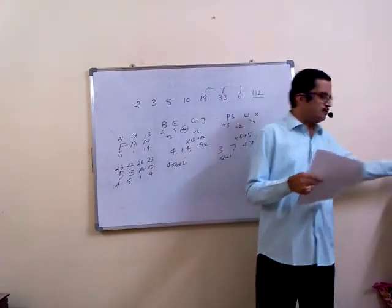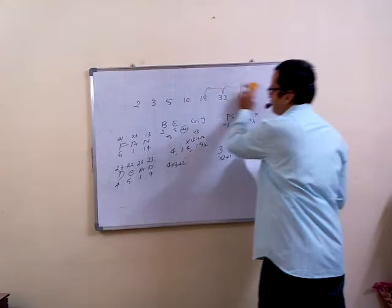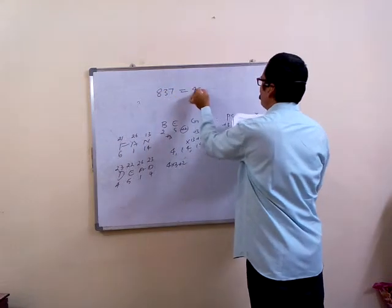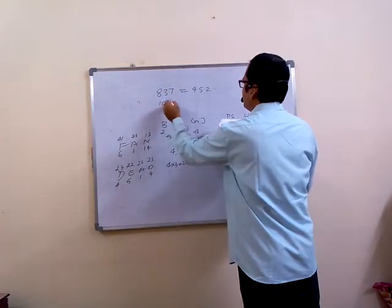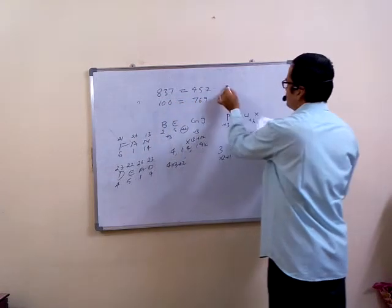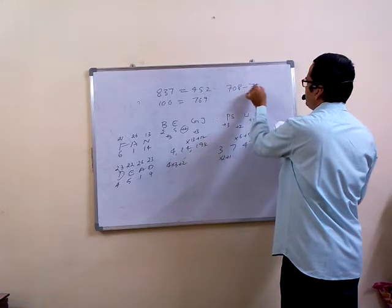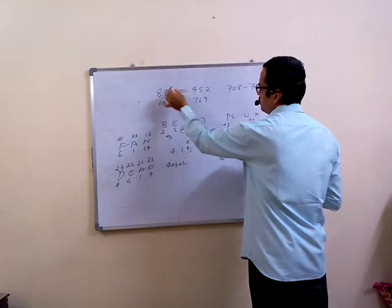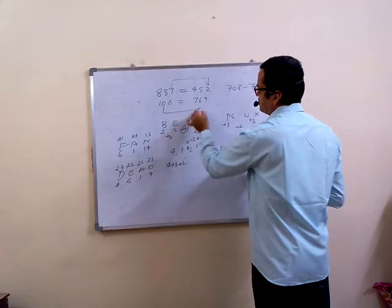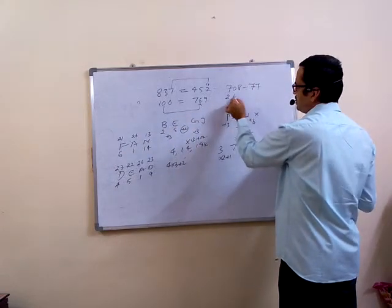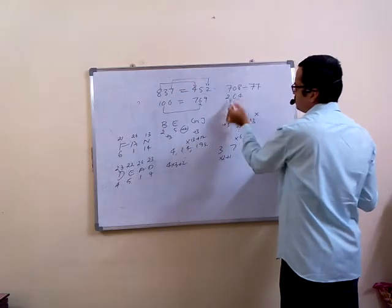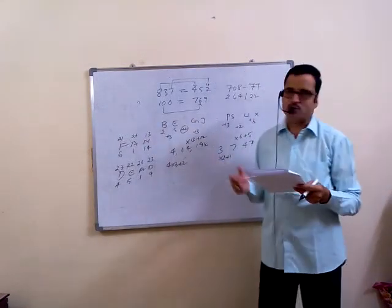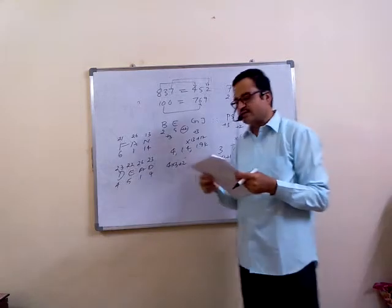Question number 10. They give you that kind of equation. 8, 3, 7 is equal to 4, 52. 1, 0, 6 is equal to 7, 69. Based on that, find out 7, 0, 8. 8 into 4, 3 into 5, 7 into 2, like this. 0 is coded as 6. So 7, 0, 8 - this is 2, it is 6, 8 is equal to 4. 264 divided by 22 equals 12. Tenth question, fourth option.